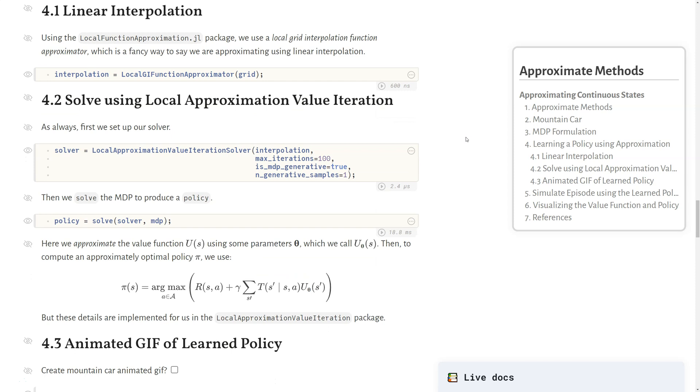Now that we have this grid, this discretized grid set up, we can define how we want to interpolate this grid. We'll use what comes from the local function approximation package, which is called local grid interpolation function approximation. We'll instantiate that interpolator which really is a fancy way to say we're going to approximate our value by linear interpolating as I shown on that grid. Given that interpolator, we can solve using what's called local approximation value iteration. It'll find the optimal policy given the interpolation but not necessarily the optimal policy of the continuous problem. This will be an approximately optimal policy.